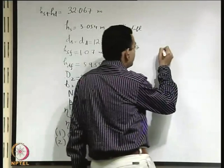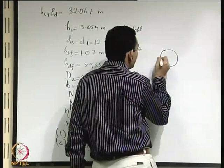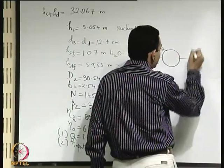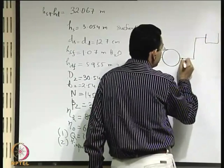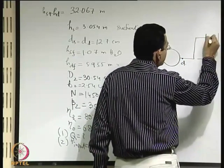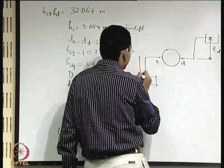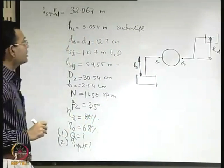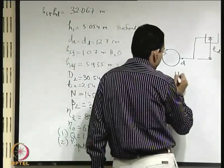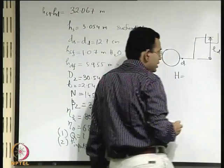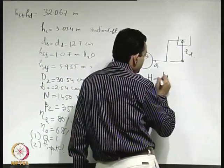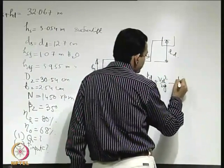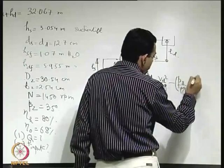Let us quickly draw the schematic. If you have this as the pump, you have the reservoir on the suction side and then the delivery side. The total head developed by the pump is PD/ρg + Vd²/2g minus PS/ρg + Vs²/2g.